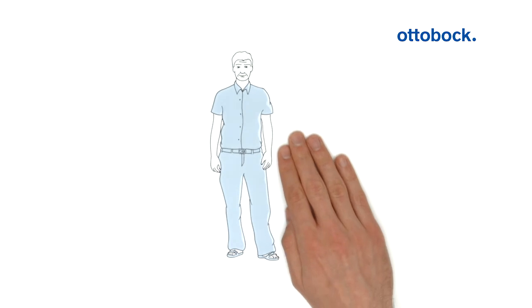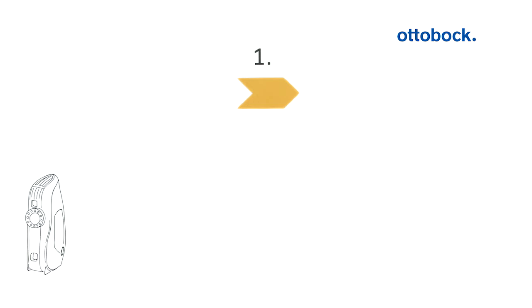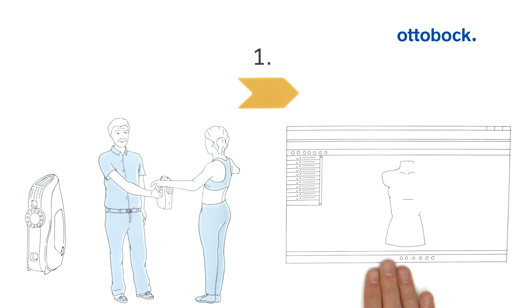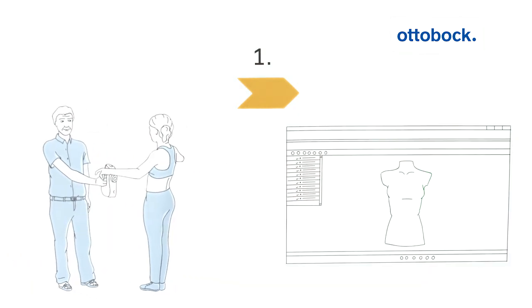Let us join Peter, an orthopedic technician, in this process. In a first step, he digitizes the patient's body part using a handheld 3D scanner. He directs the scanner to the area to be modeled. The screen shows him in real time which parts have already been recorded and which still have to be scanned.